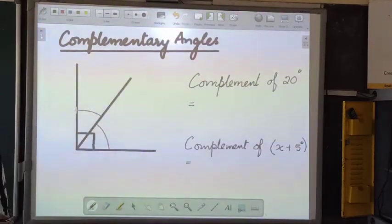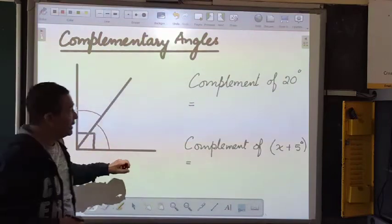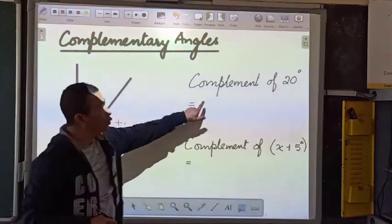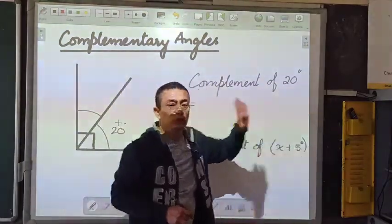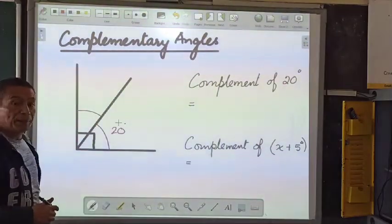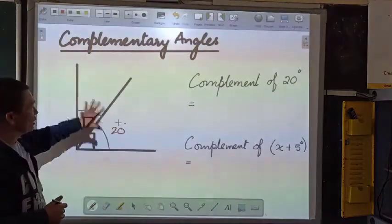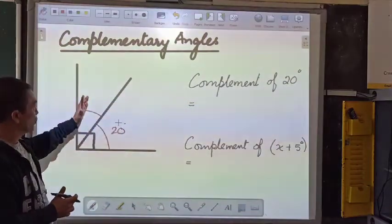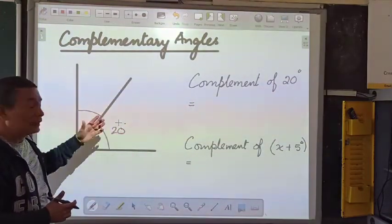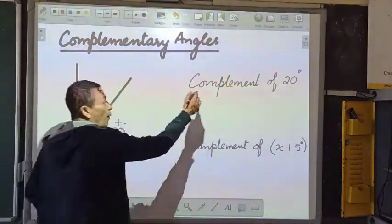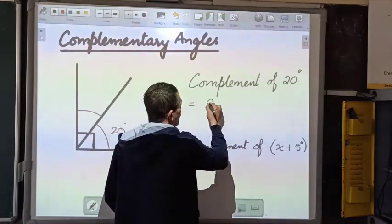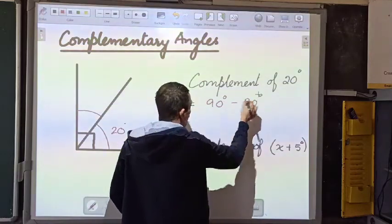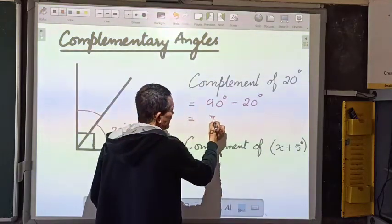Suppose we say that this angle here is 20 degrees. What will be the complement of 20 degrees? Since the total is supposed to be 90 degrees, the complement of 20 degrees will be 90 degrees minus 20 degrees, which gives us 70 degrees.